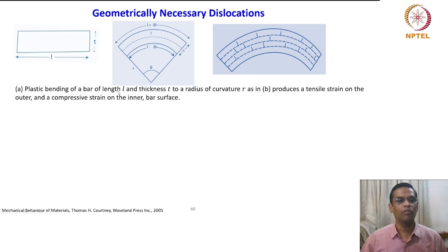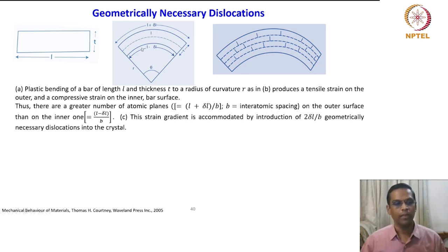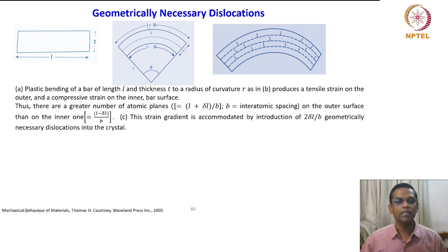This produces a tensile strain on the outer and a compressive strain on the inner bar surface. Since it is a bar, inside it creates a compressive strain and outside a tensile strain. The length on the outer surface extends from l to l plus delta l, and on the inner surface it contracts from l to l minus delta l.